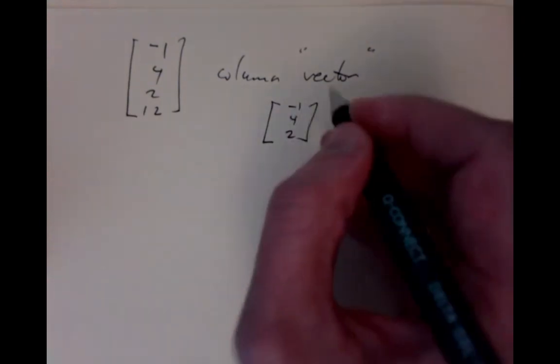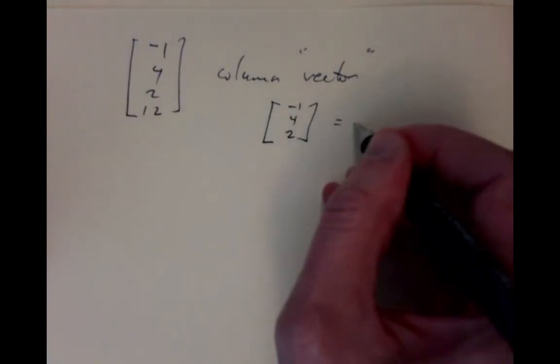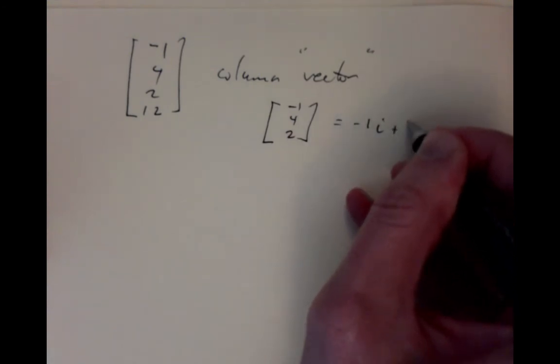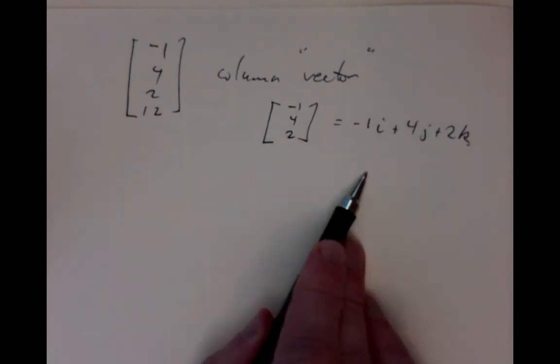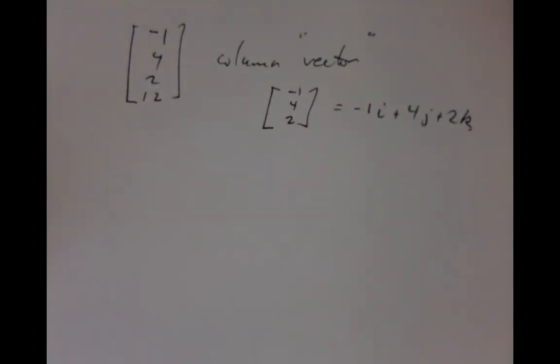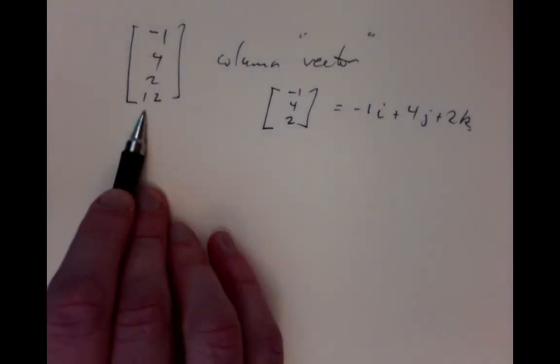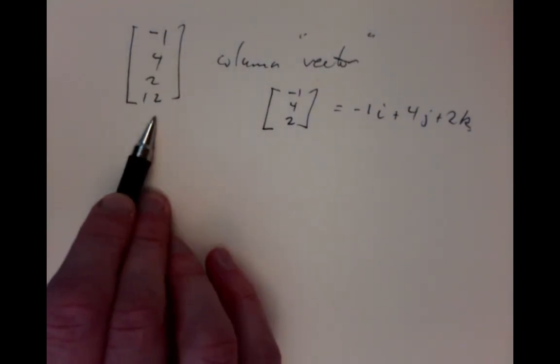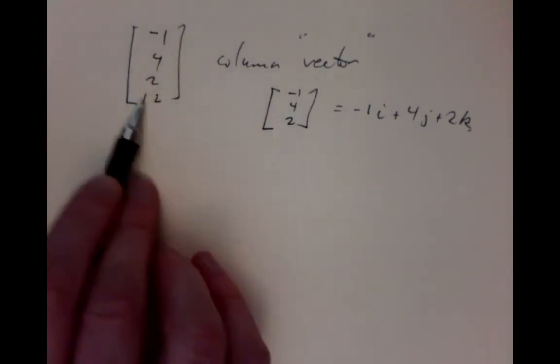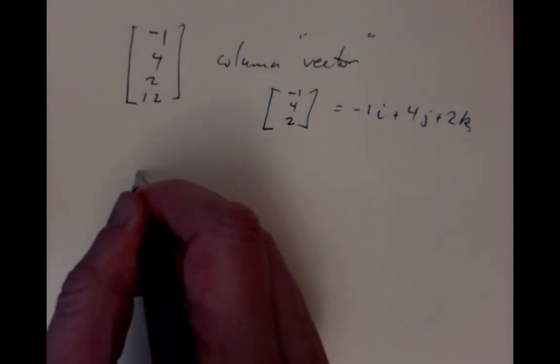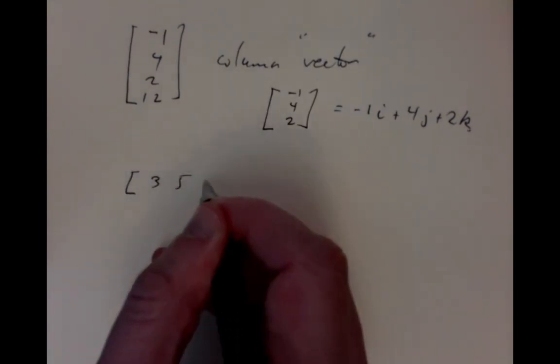If we didn't have that 12 in there, then we could always think of it as being a vector in the usual sense of our vectors as -1i plus 4j plus 2k. And that would be fine. That's in the sense in which we thought of vectors. But if we allow four entries, then it's a four dimensional vector. And that's a bit strange. We're not going to do a lot of that. And it certainly doesn't fit in neatly with the geometry that we've been talking about.